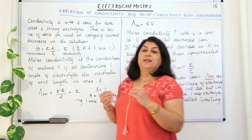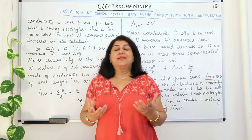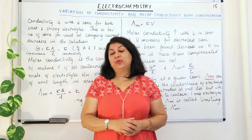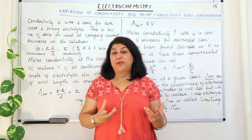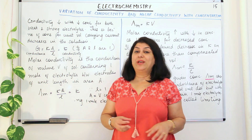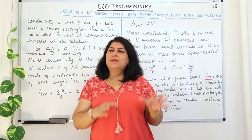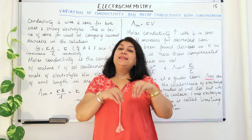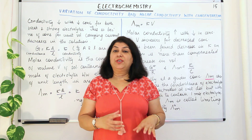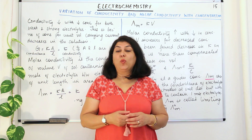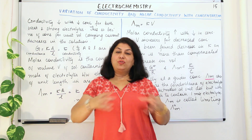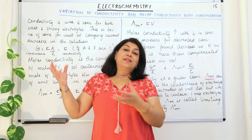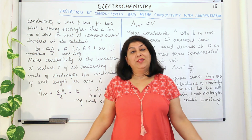When does a solution conduct electricity, or why does it start conducting electricity? If we take pure water and pass electric current through it, it does not have enough ions in the form of H⁺ and OH⁻ to carry the current, so it is a poor conductor. But when you add an ionic compound to it, the water starts conducting electricity because the ionic compound dissociates into ions, and the ions act as charge carriers.